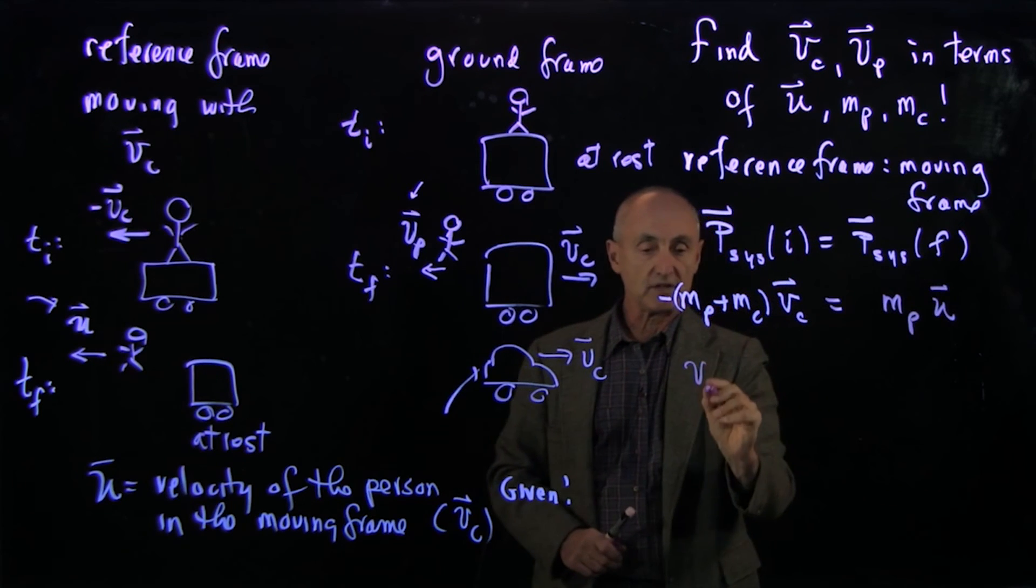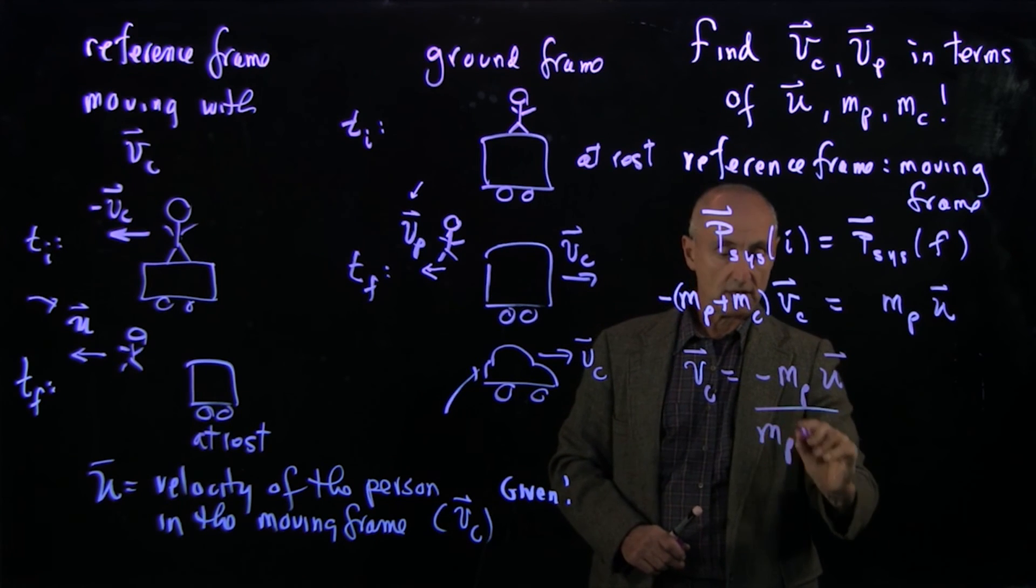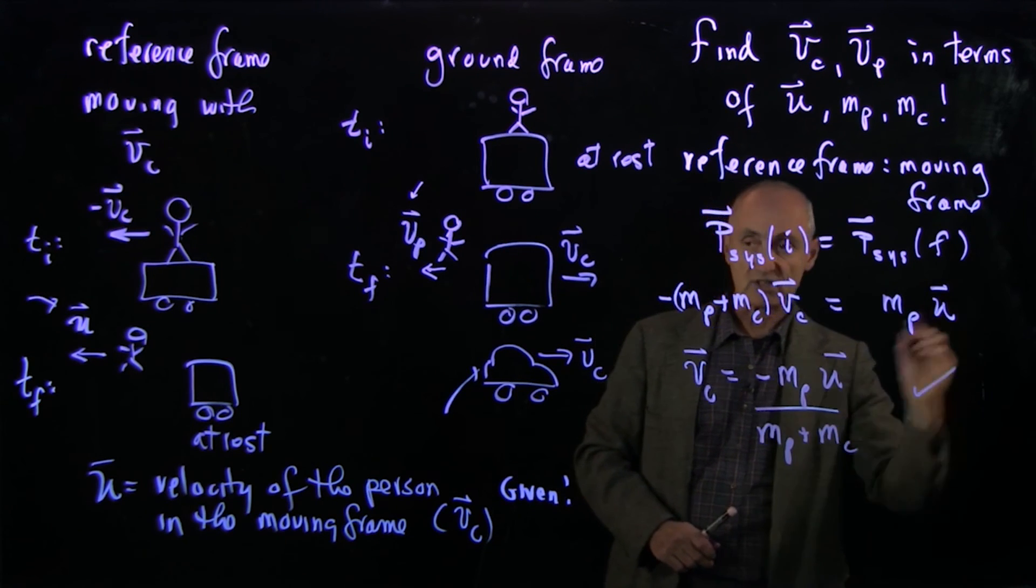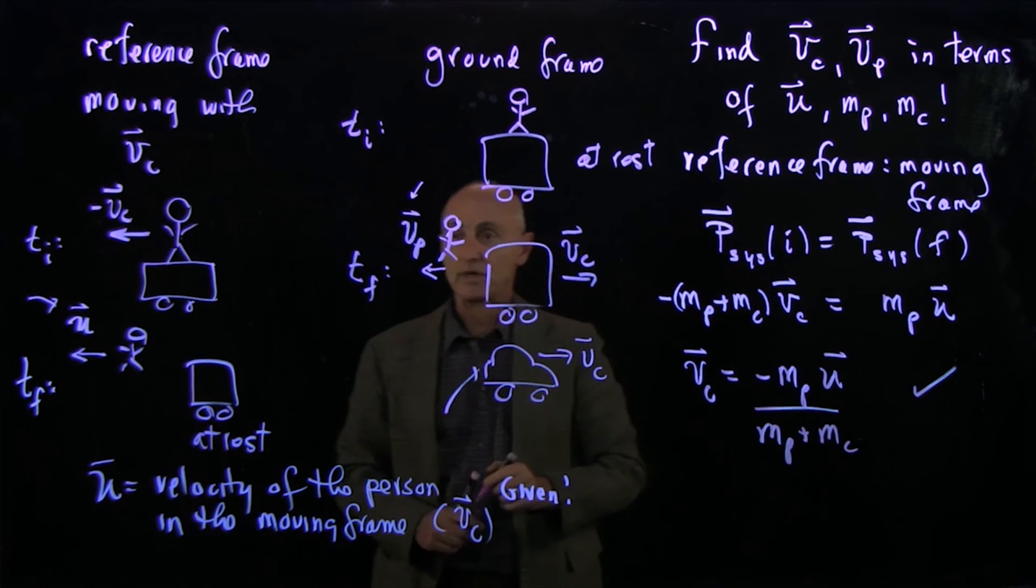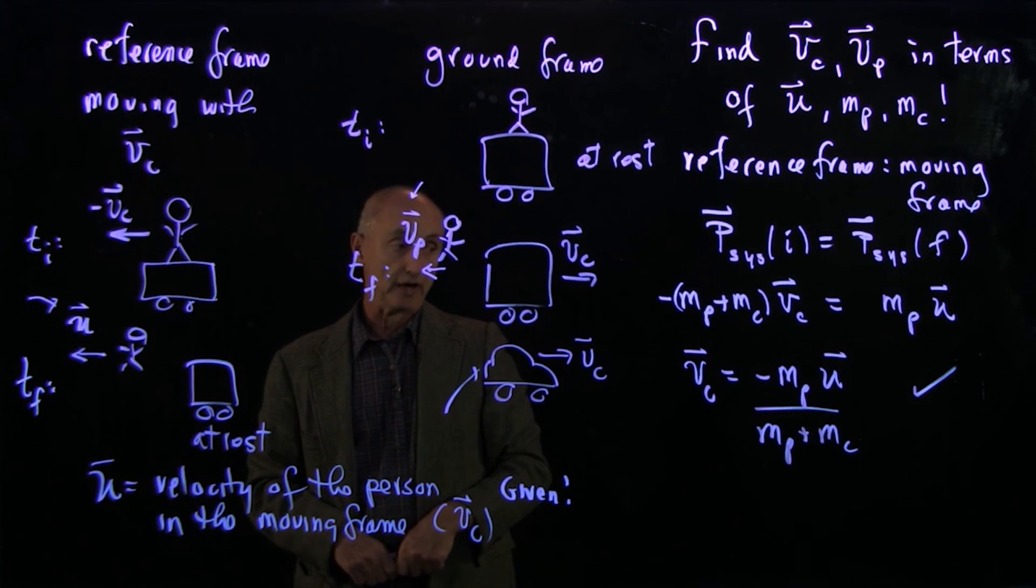And so we see that v cart equals minus m person u over m person plus mc, which is exactly the same result that we got in the ground frame. But it was actually much easier to solve in the moving frame.